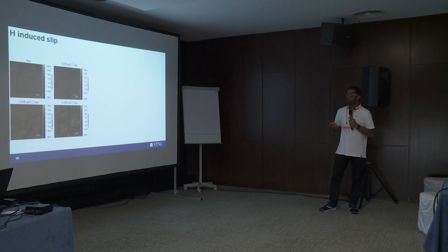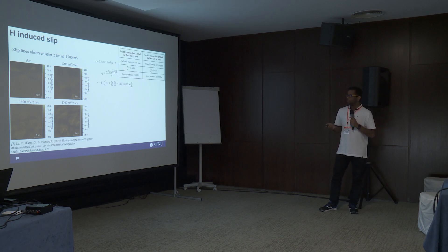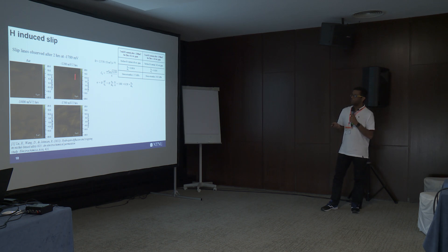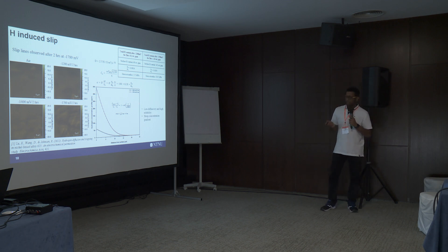Another observation is hydrogen-induced slip. These are scanning probe images captured at different potentials. The surface remains intact at lower potentials of 1,200 and 1,400 mV. However, at 1,700 mV, slip lines are clearly visible. To quantify the slip line formation, I estimated the internal stress using a standard relation. At 1,200 mV the estimated surface stress is 175 MPa, whereas at 1,700 mV it reaches approximately 1 GPa, which is far higher than the yield strength of the material. The diffusion profile shows a steep concentration gradient at the higher potential. The combination of sluggish diffusion and supersaturation of hydrogen at the surface is the most likely reason for slip line formation during hydrogen charging.